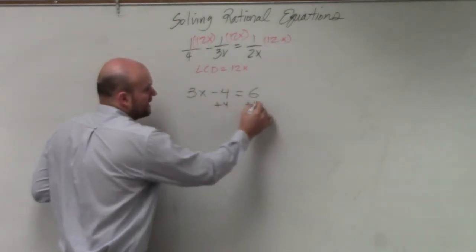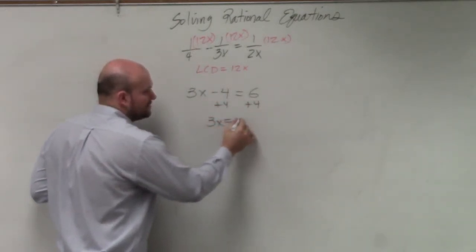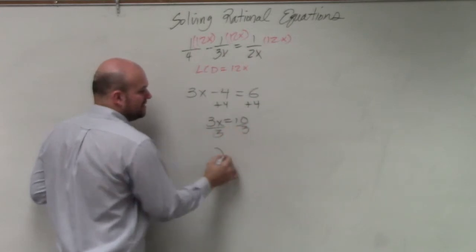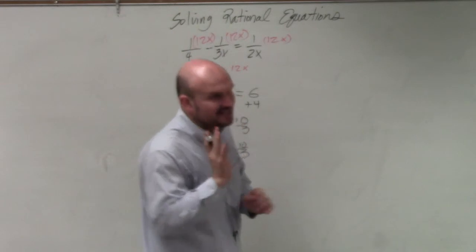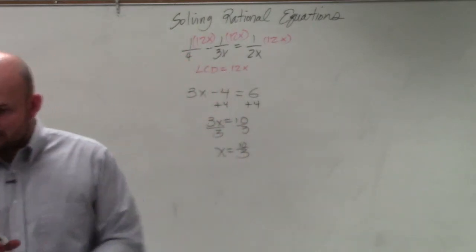Add 4, add 4, 3x equals 10, divide by 3, divide by 3, x equals 10 thirds. And just leave it like that. Please do not give me decimals. Leave it just like that.